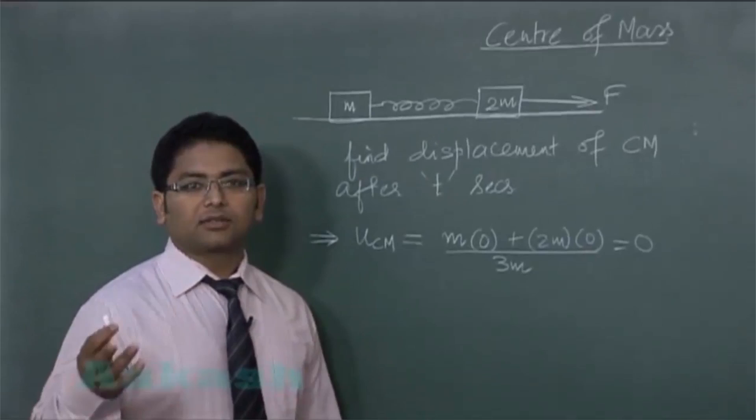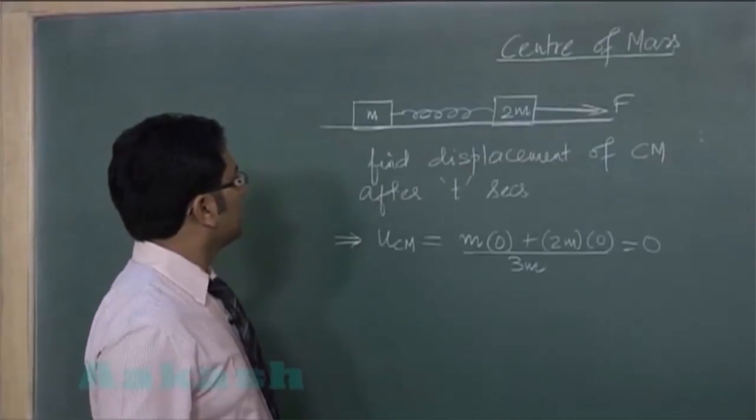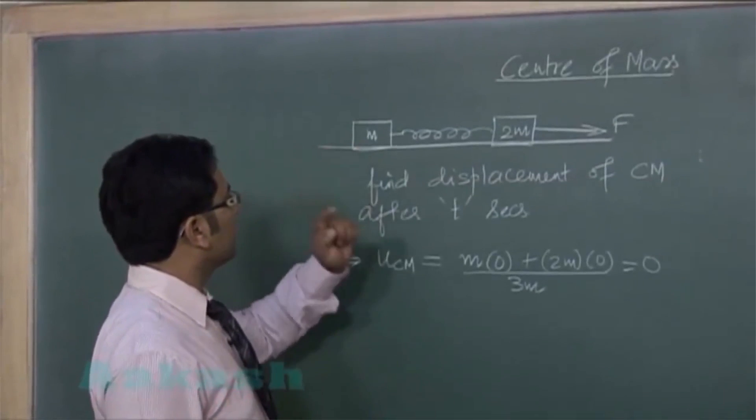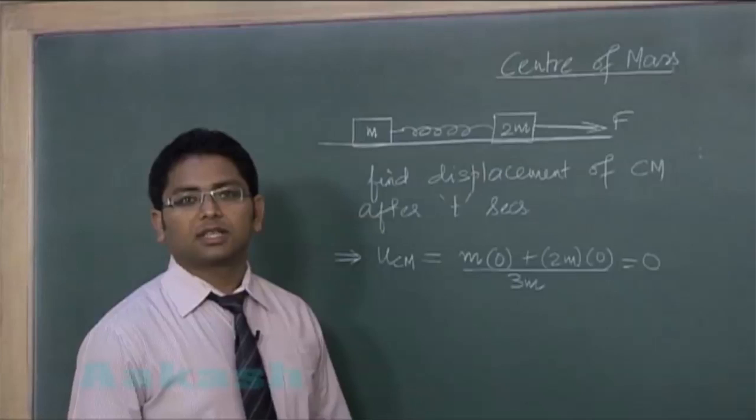Although calculate kerne ka jarruat nahi thi, क्योंकि साफ पता चल रहा है observation से u1 ka value 0, u2 ka value 0, तो ucm ka value is 0 होना चाहिए।